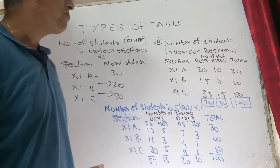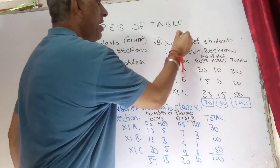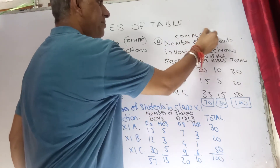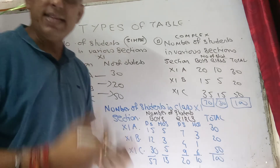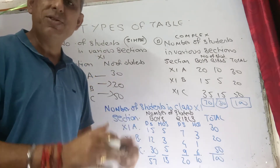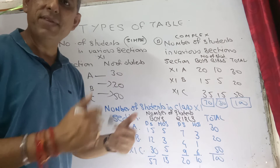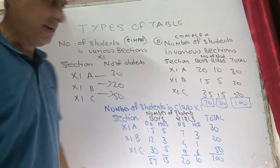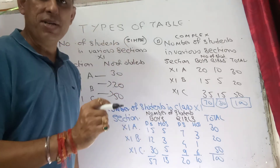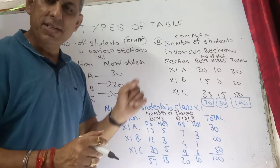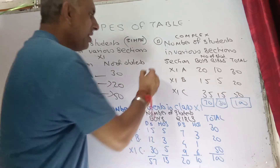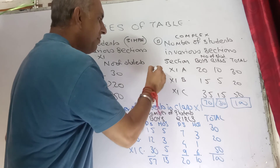Such types of tables are referred to as complex tables. The extent of complexity depends upon how much information you want to provide through your table. Since two pieces of information are available — the strength of the class as well as how many boys and girls — it is referred to as a two-way table.